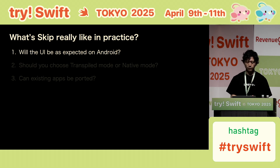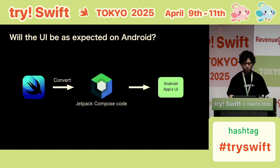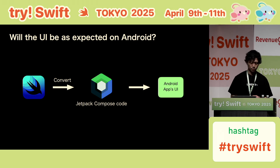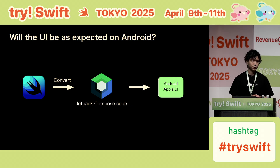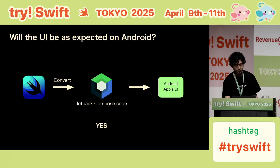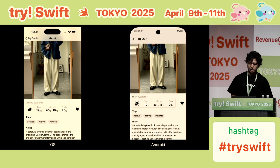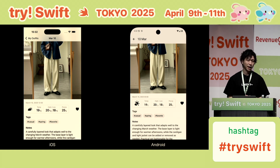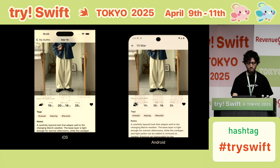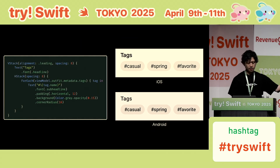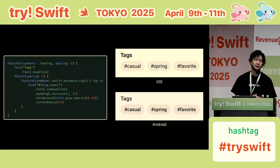Let's talk about the first point. With Skip, SwiftUI code is converted into Jetpack Compose. So does the UI look as expected on Android? The answer is yes. Even in my app, I didn't need to make any Android-specific adjustments, and the UI looks just as expected. For example, this is a code for TagsView.